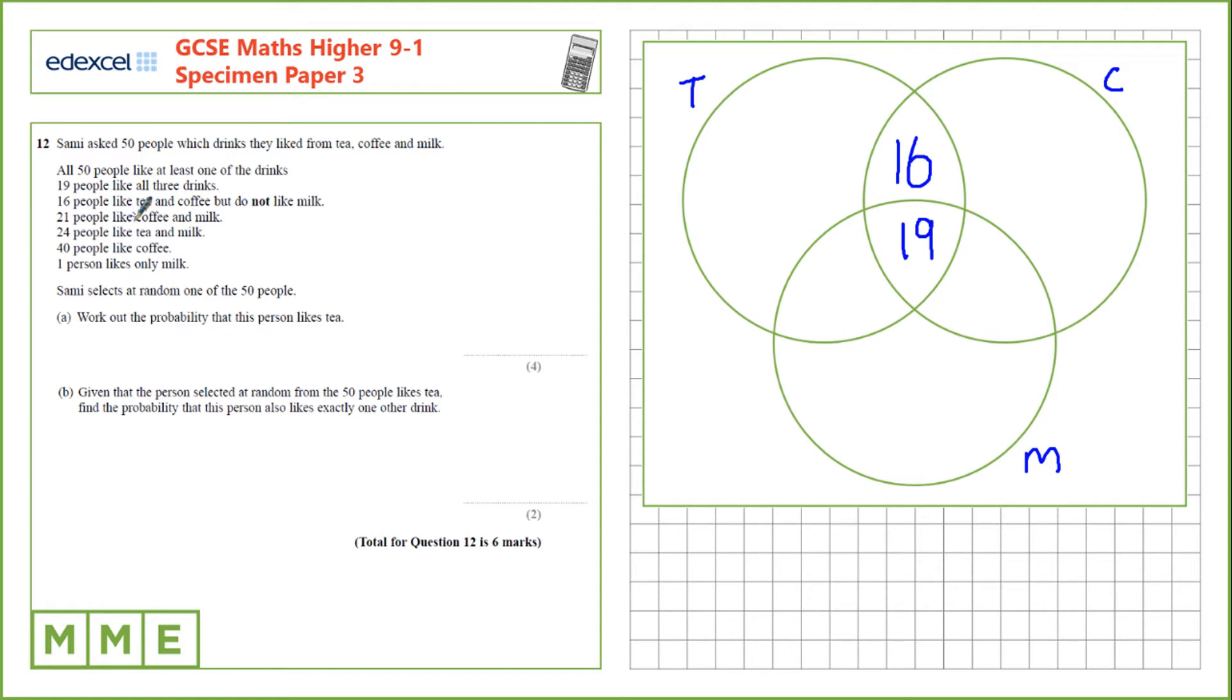We know that 21 people like coffee and milk, so this in total should have 21 people in it. There are already 19 there, so we need to put 2 here. We know 24 people like tea and milk, we already have 19 people in this section. We should have 24, we need to put 5 in that gap there.